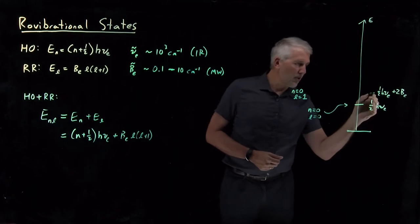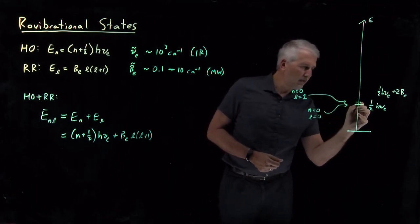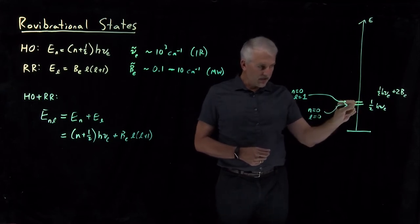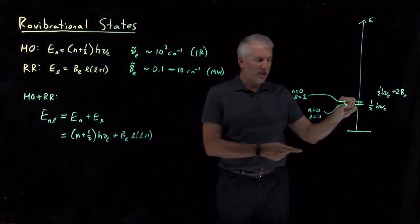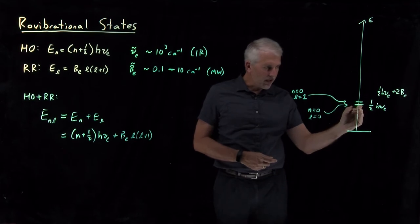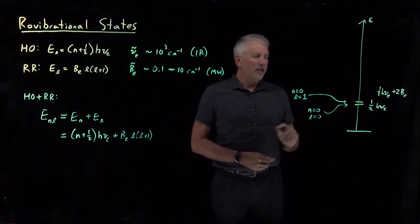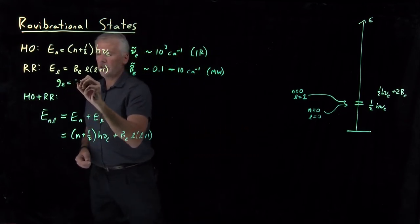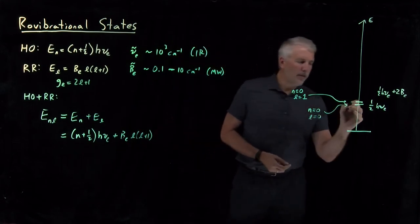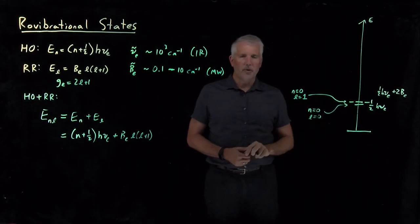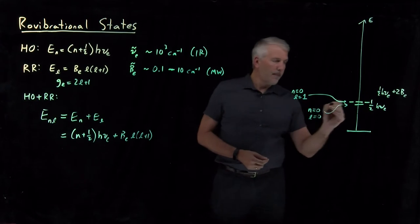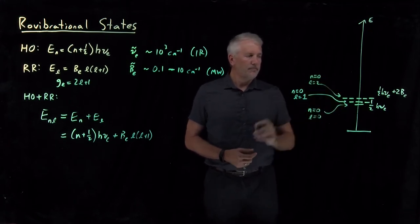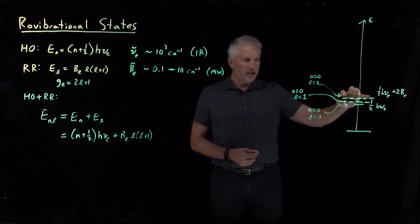I'll have a hard time drawing this to scale, so I'll draw this level just barely above the ground vibrational and rotational state. In fact, this extra rotational energy should be several hundred or even several thousand times smaller than the vibrational energy. Also remember that these states are degenerate — the rigid rotor states have a degeneracy of 2l plus 1. So there are three states with l equals 1 slightly above the ground vibrational state, five states with l equals 2, then 7 and 9 states stacked up.